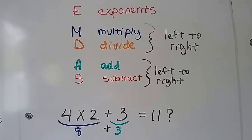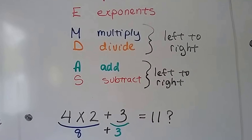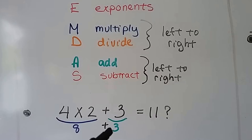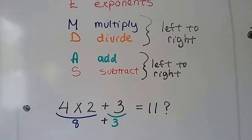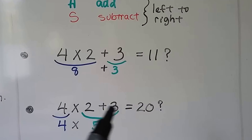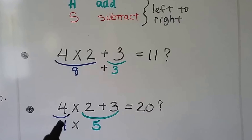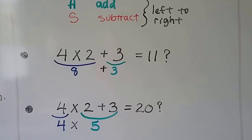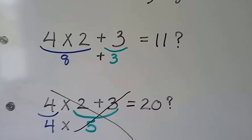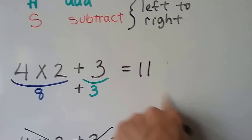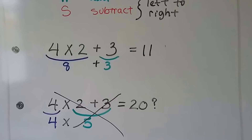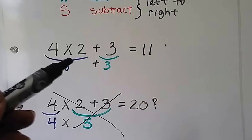Take a look at this: we have 4 times 2 plus 3. If we follow the order of operations, we multiply first — 4 times 2 is 8 — then add the 3, giving us 11. But if we didn't follow the order and added 2 plus 3 first we'd get 5, then multiplying by 4 gives us 20. That is not correct because it's not following the order of operations.